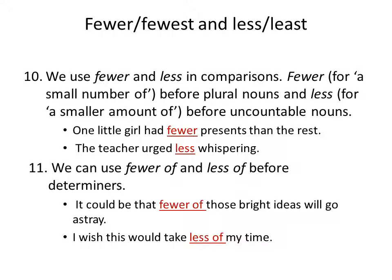Fewer and less; fewest and least. We use fewer and less in comparisons — fewer for a small number of plural nouns, and less for a small amount of uncountable nouns. For example: 'One little girl had fewer presents than the rest.' 'The teacher urged less whispering.' We can also use fewer of and less of before determiners. For example: 'It could be that fewer of those bright ideas will go astray.' 'I wish this would take less of my time.'